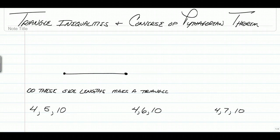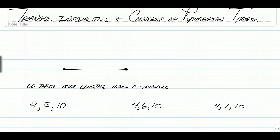First, let's see if we can figure out if three side lengths actually make a triangle. We have three different sets of sides: 4-5-10, 4-6-10, and 4-7-10. We're going to come up with possibilities of whether or not these make a triangle. Notice how they're all arranged in numerical order — that's a tip that'll make things much easier if you rearrange side lengths in numerical order.